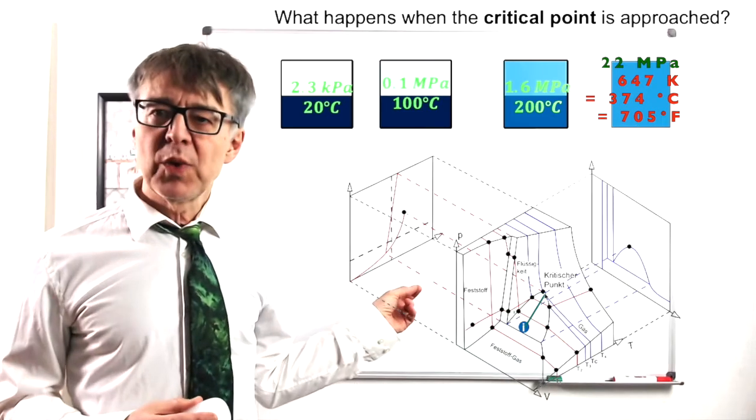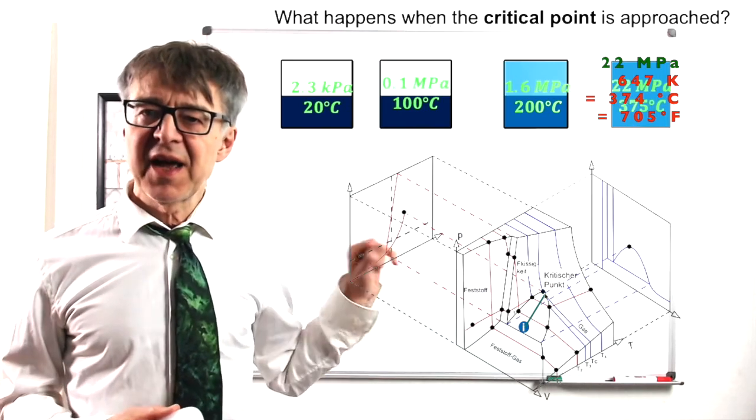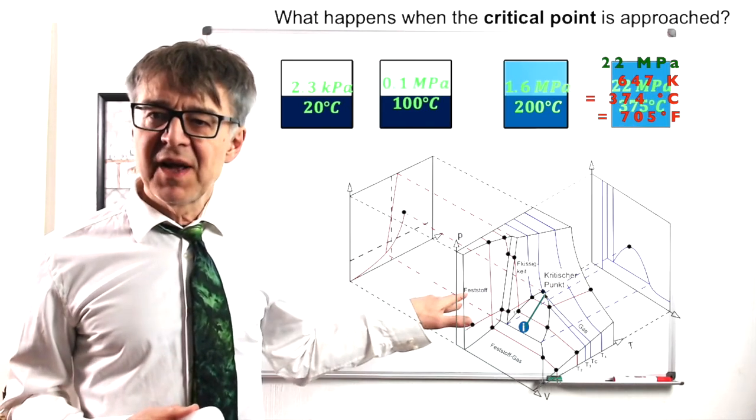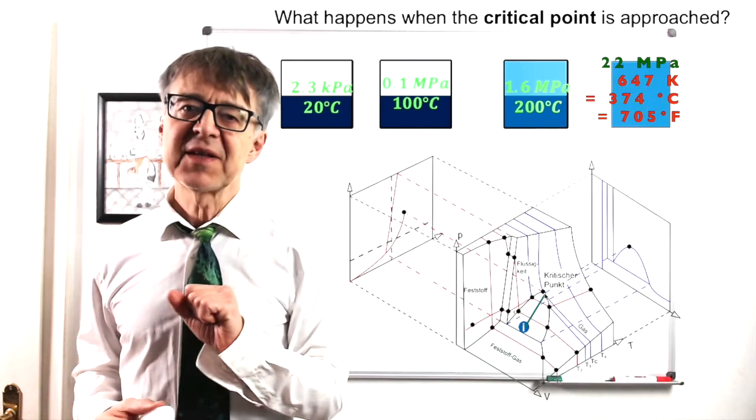In the state diagram, we start at I in the two-phase realm and then go up and then hit that critical point.